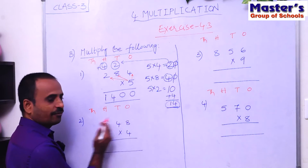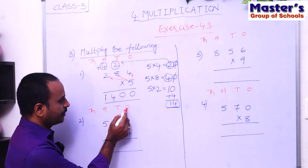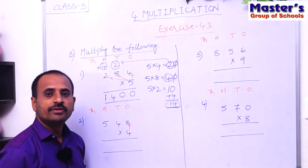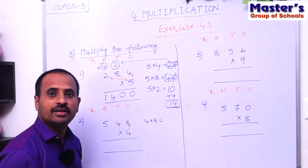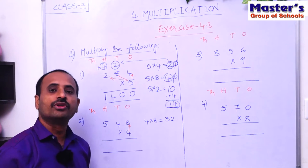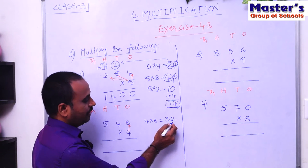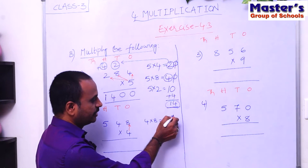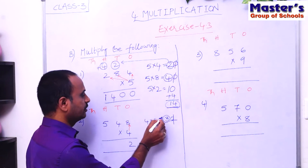Start multiplication from ones place. The digit in ones place is 8, so multiply 8 with 4 — that is 4 × 8. Children, 4 eights are 32, and 32 is a two-digit number. If the product is a two-digit number, we regroup — we carry. Write the second digit 2 under ones place and carry the first digit 3 to the next place — the tens place.